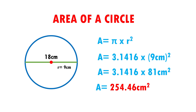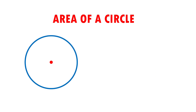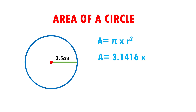Very easy, right? Let's see another example. Here I have a circle with a radius of 3.5 centimeters. First, I put the formula: Area equals pi times radius squared. Area equals 3.1416 times 3.5 centimeters of the radius, squared.